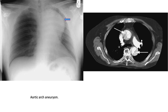This is another cardiovascular example: aortic arch aneurysm. On the right is a CT scan of the aortic arch aneurysm, showing atheromatous plaques indicated by arrows. These atheromatous plaques are causing severe dilatation of the aorta.